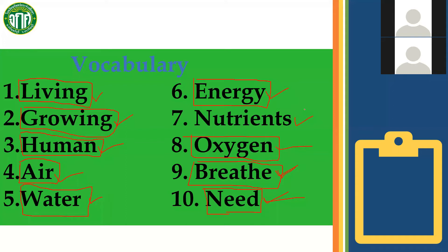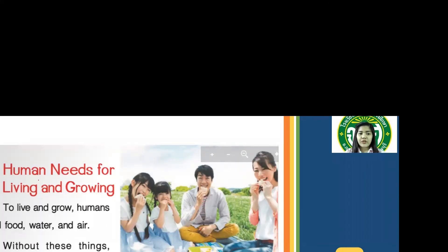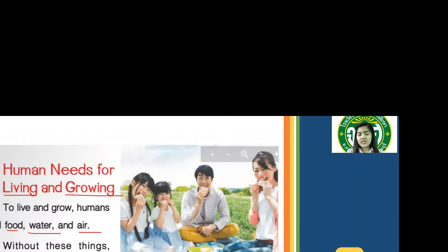Let's move on to the discussion. Please listen, everyone. Human needs for living and growing. To live and grow, humans need food, water, and air. Without these things, humans will not live well and they will die. We are going to die if we don't have something to eat, don't have water to drink, and don't have air to breathe. That's why these are things really needed for us to grow and live.